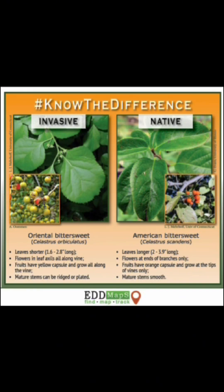Another characteristic that distinguishes between the two is the stems. When American bittersweet is mature, it has a smoother stem, whereas Asian bittersweet has a rougher, bark-like stem characteristic.